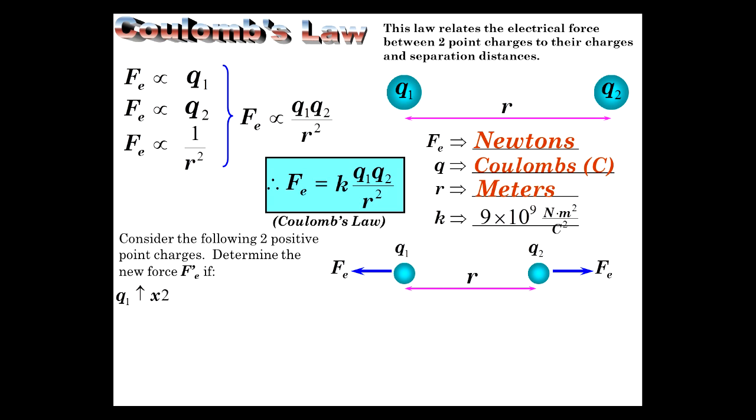Now, let's look at these two positive point charges. What happens to the force, the electrical force, if we make Q1 go up by a factor of 2, Q2 by 3, and we'll cut the distance in half? Let's see what happens. To figure that out, just put them into a ratio.